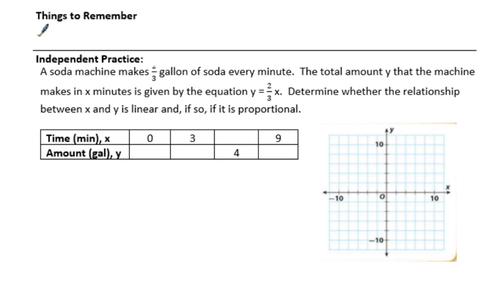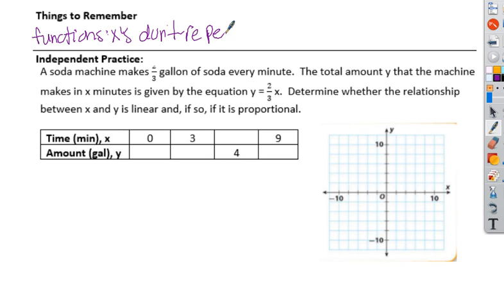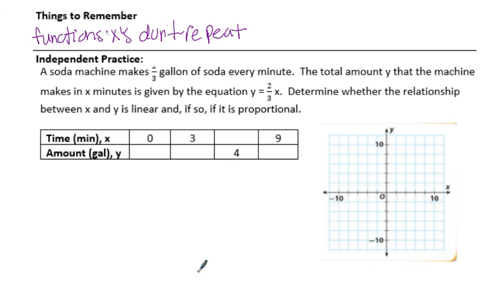Things to remember - mainly just that functions, x's don't repeat. Just want to keep making sure we remember that. Here's your independent practice. They filled in part of the table. You need to fill in the rest, determine its relationship, and then graph this. This is very similar to what we did in 4.1. If you need help with this part, go look at 4.1. You could also use your slope. There's lots of things you could do. Until next time, adios.